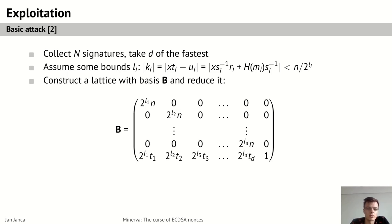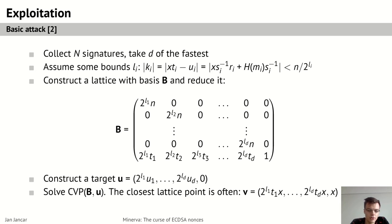Next, a lattice with the following basis is constructed, utilizing the bounds and the values from the known signatures. The target vector is constructed from the known signatures and assumed bounds, this vector u. And finally, the attacker solves the closest vector problem on this lattice with this target vector.